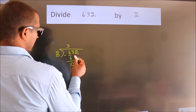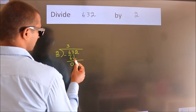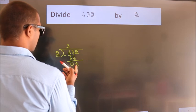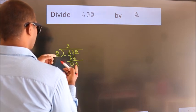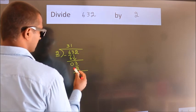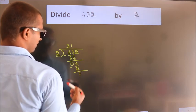After this, bring down the beside number. 3 down. A number close to 3 in 2 table is 2 times 1 is 2. Now, we subtract. We get 1.